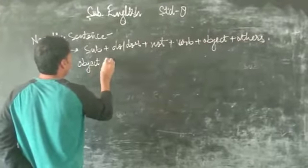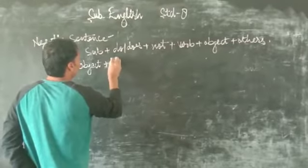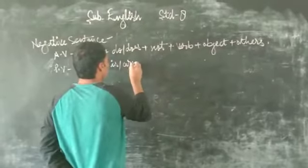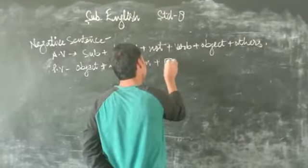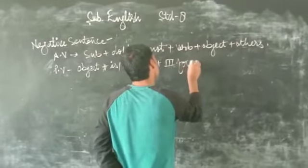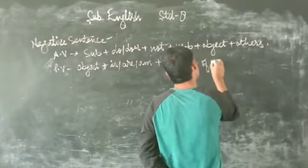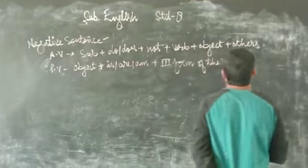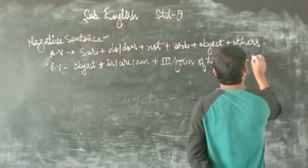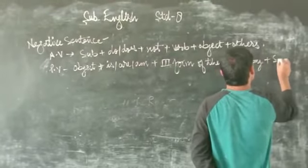Passive voice: Object plus is, are, or am plus not plus third form of the verb plus by plus subject.